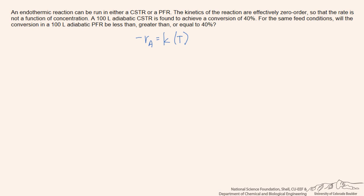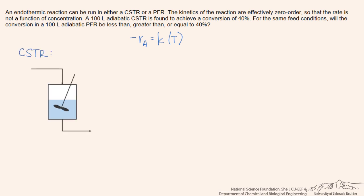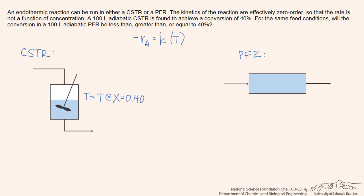In a CSTR we have a well-mixed situation, so the temperature in the reactor will be equal to the temperature at which we have the conversion of 40%. The temperature in a plug-flow reactor, which is the same size in this case, will actually vary down the length of the reactor.